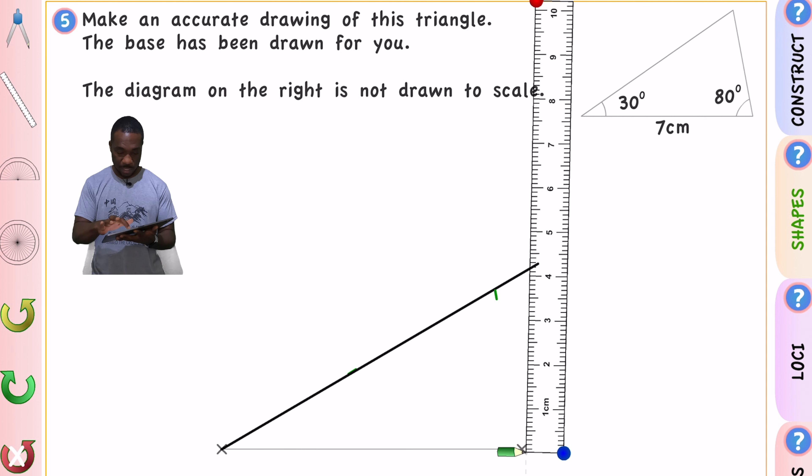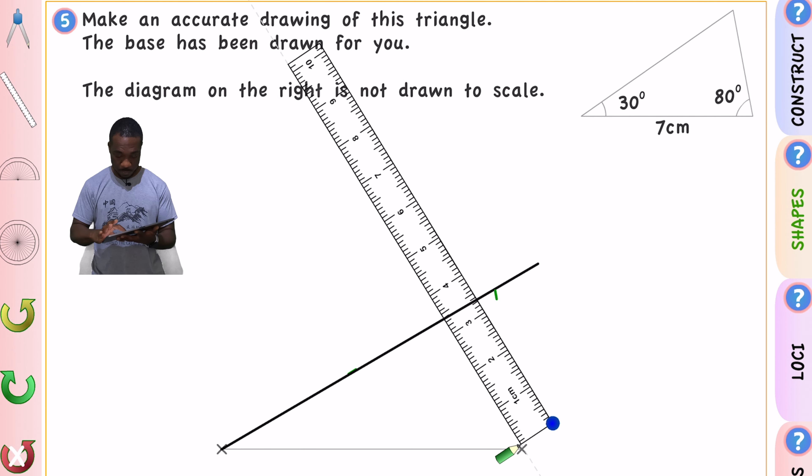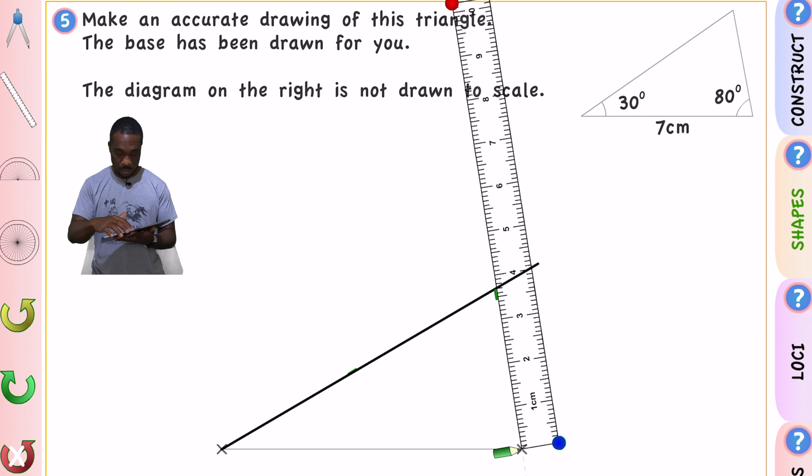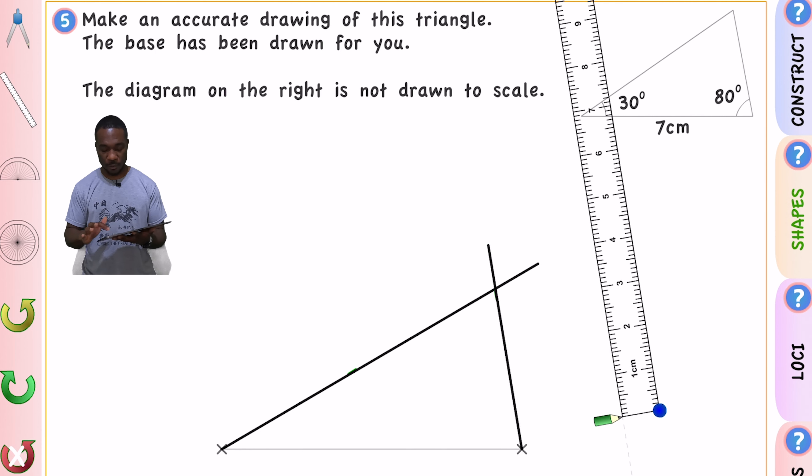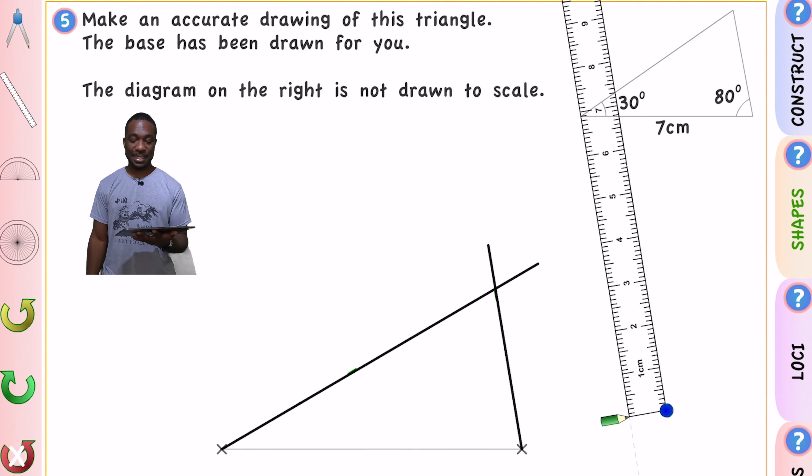And then I'm going to take my ruler. And I'm going to go through that line. So make sure it is bang on that end point. Needs to be spot on. And then through that line. Don't worry about it being too long. And just like that it is finished.